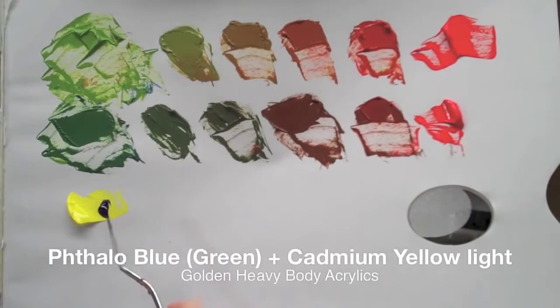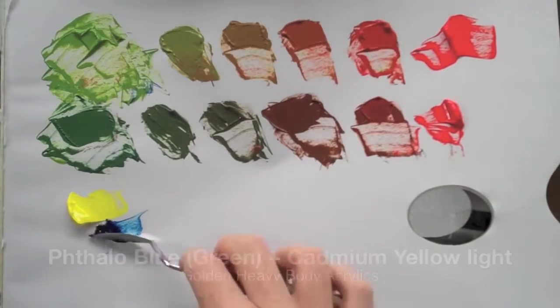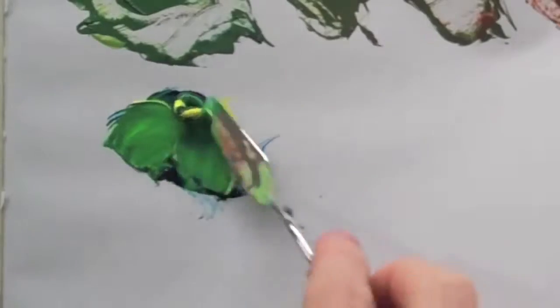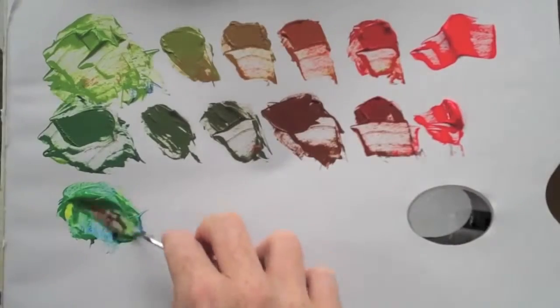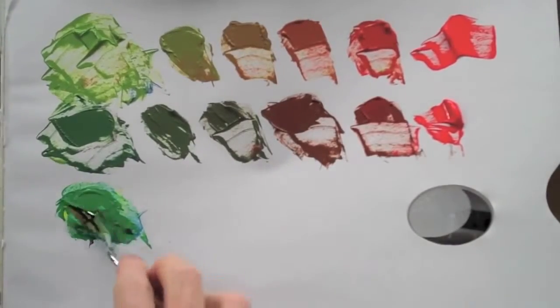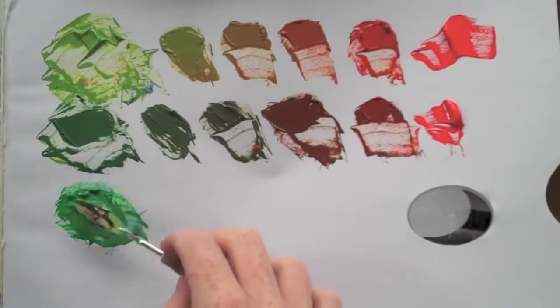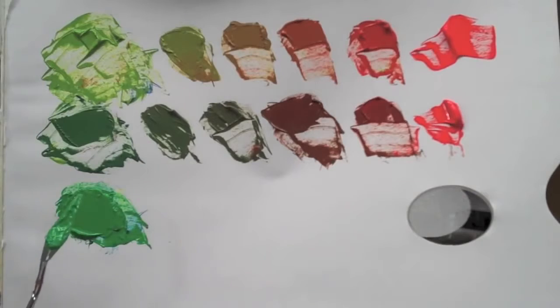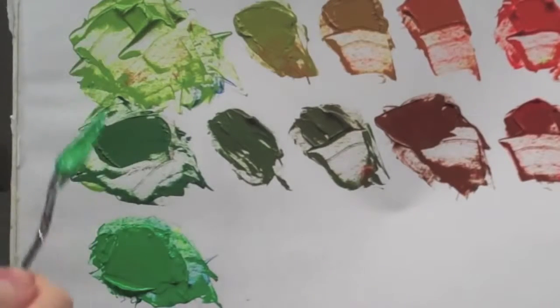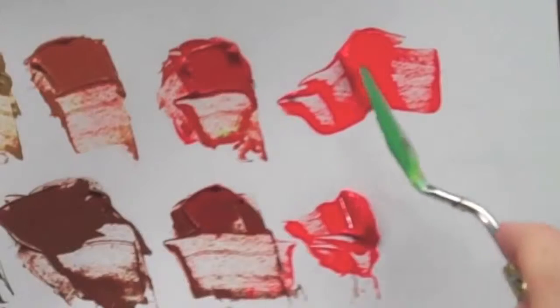This is with the phthalo blue with the green bias. See how this is a lot stronger than these other greens.